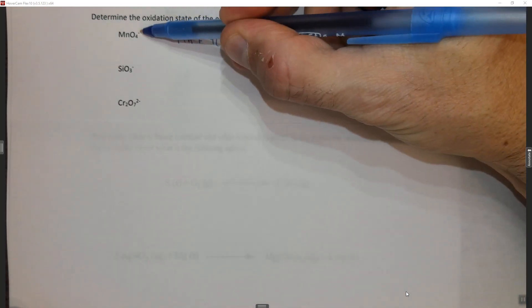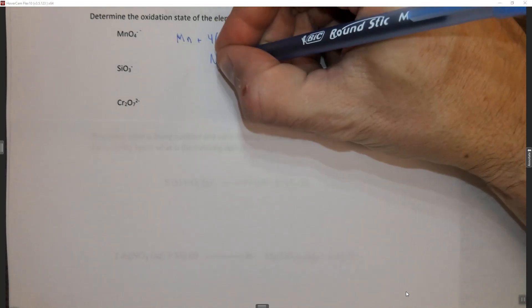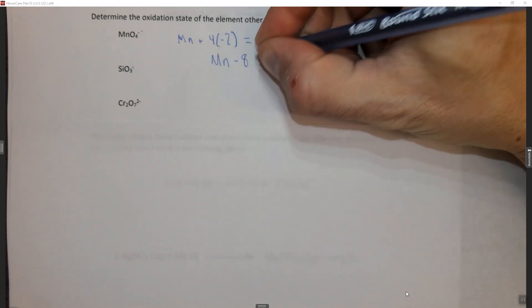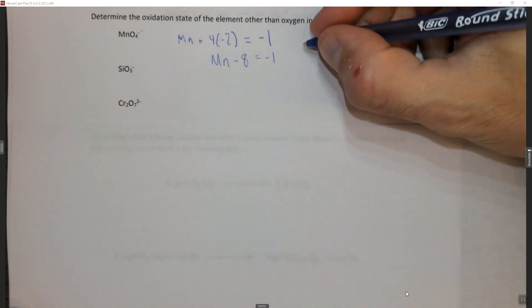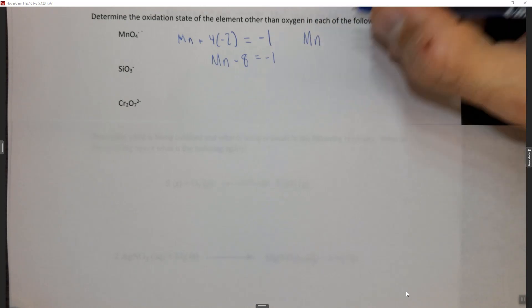The total charge on the compound. So it's going to be manganese minus eight equals minus one. You add eight to both sides and you get manganese equals plus seven.